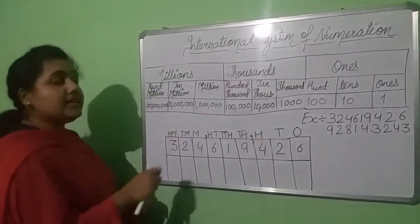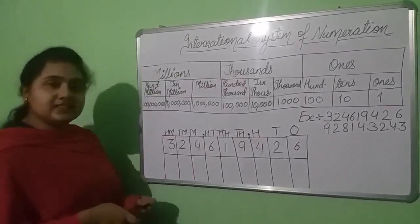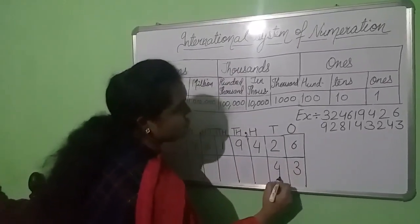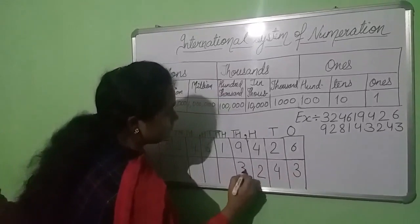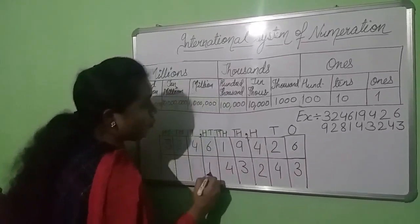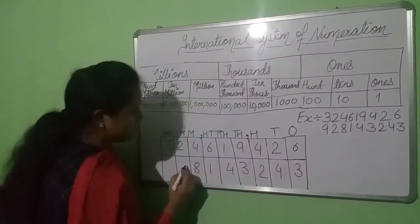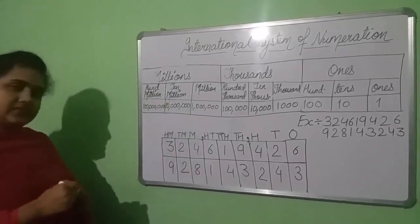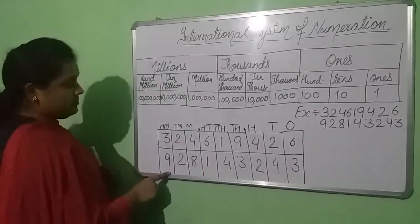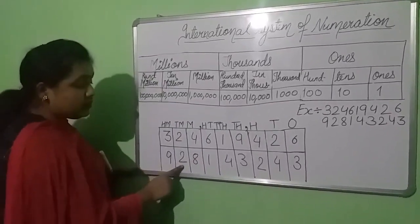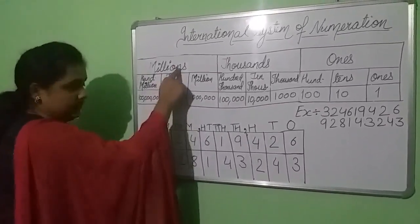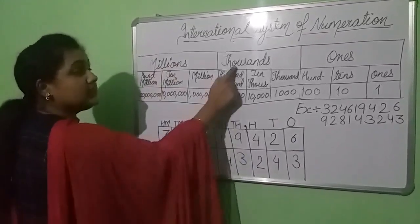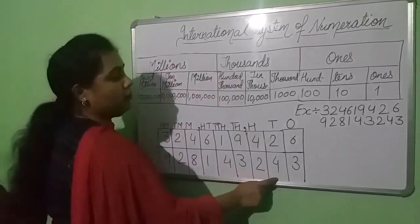Let's write the second number, which is 3, 4, 2, 3, 4, 1, 8, 2, 9. Let's read this number also. We can read this number as 928,143,243.